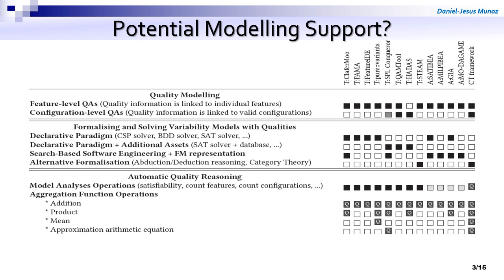We summarize the related work in this table, to check which tools — for modeling and/or for reasoning — support all those extensions. We can see that some of them, even if state of the art, support some extensions at a really low level, like just the addition aggregation function. But in general, they lack support above Boolean features and logic constraints.